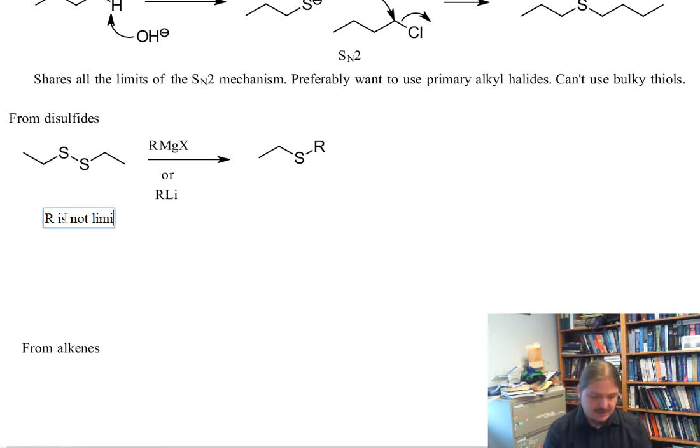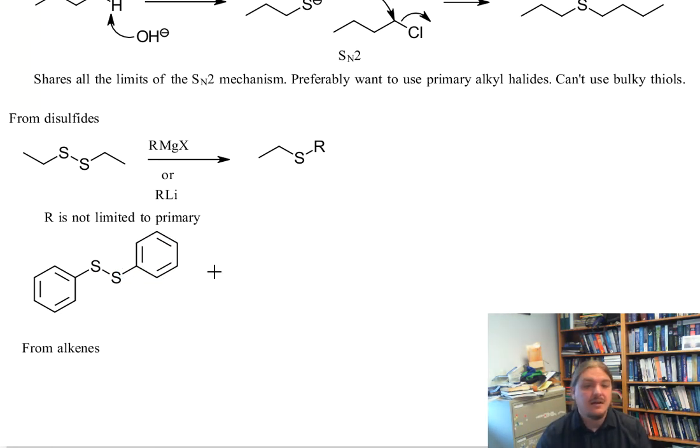And in this case, the R is not limited to primary, so we can make a lot of different kinds of disulfides. And likewise, the other group on the sulfide isn't limited to primary. So for example, we could start with diphenyl disulfide and react it with isopropyl magnesium chloride as our Grignard reagent. And this reaction would make the isopropyl phenyl sulfide. The other product of this reaction would be what's left over from the disulfide as a magnesium salt.